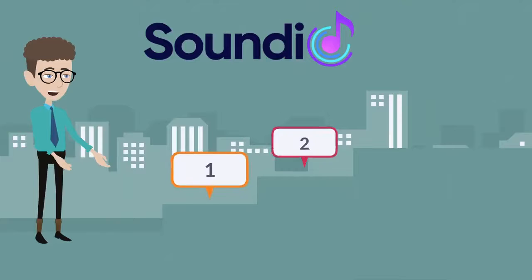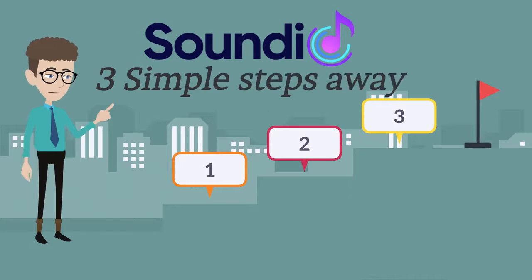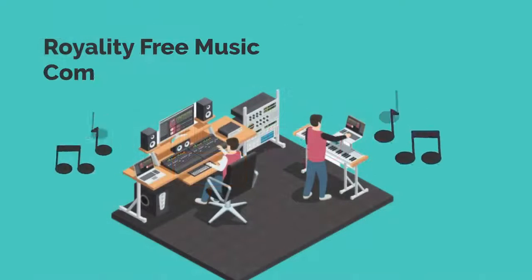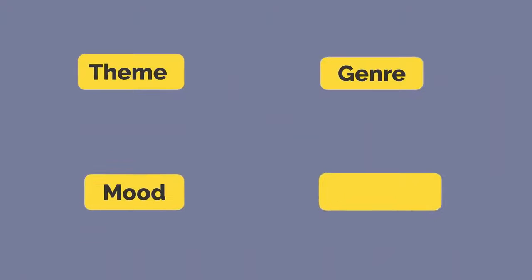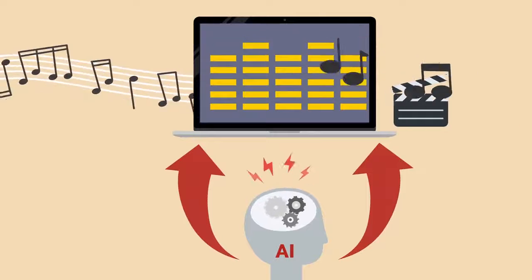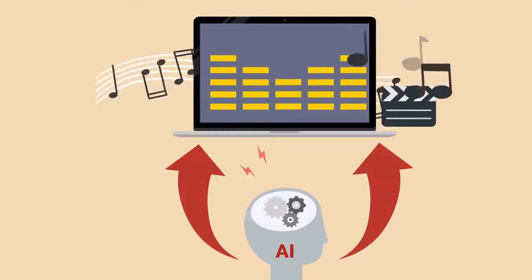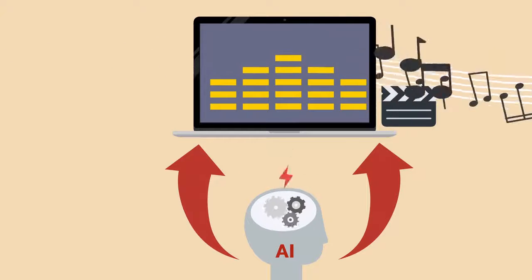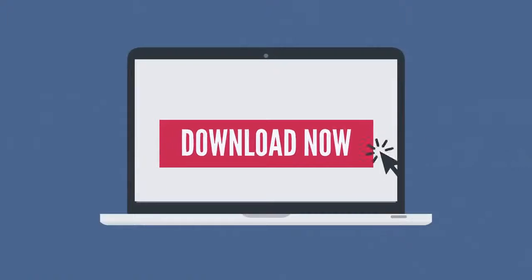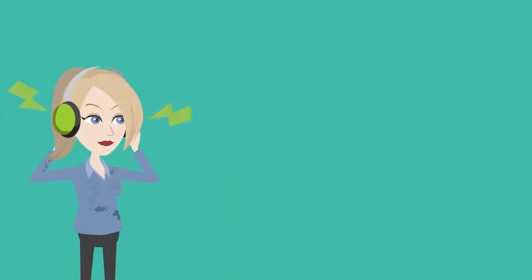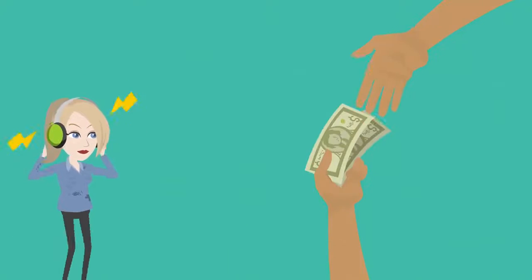With Soundio, you're only three simple steps away from starting your own royalty-free music composing agency. Step 1: Log in and select the theme, genre, mood, or category, and desired length of the track. Step 2: AI will automatically generate unique music based on your selected mood, theme, and category. Step 3: Play or download in one click. Use it for yourself or sell to your clients and keep the profits.